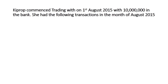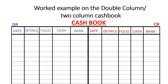We shall proceed with the first transaction. Kiprop commenced trading on 1st August 2015 with 10 million in the bank. He had the following transactions during the month. That first transaction of 10 million in the bank means we are going to debit the bank account with 10 million, so 10 million is put in the bank column on the debit side.